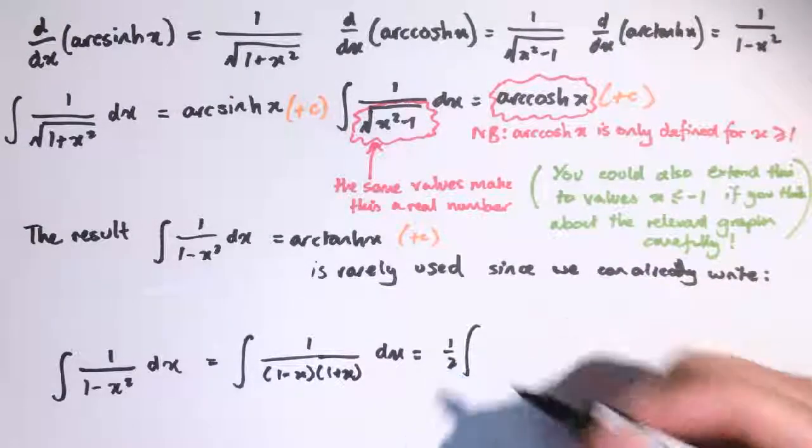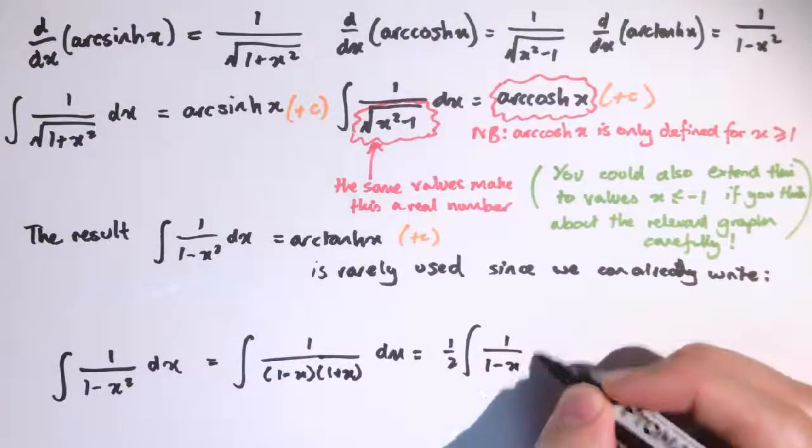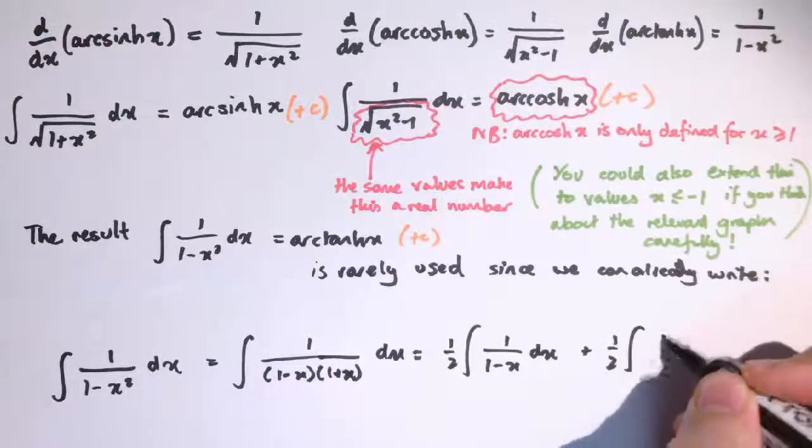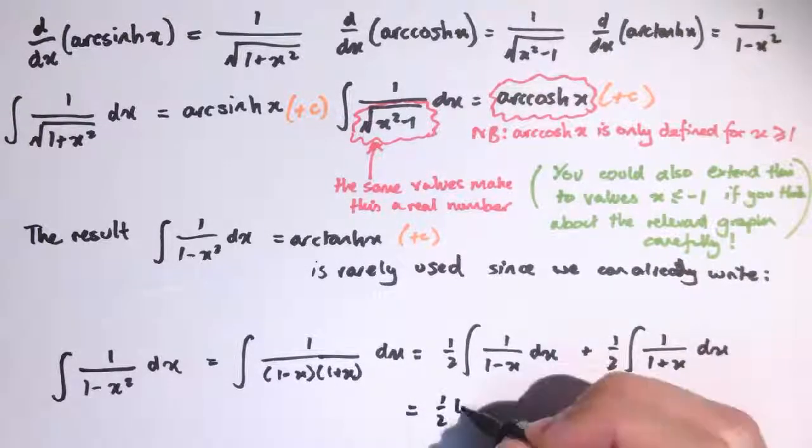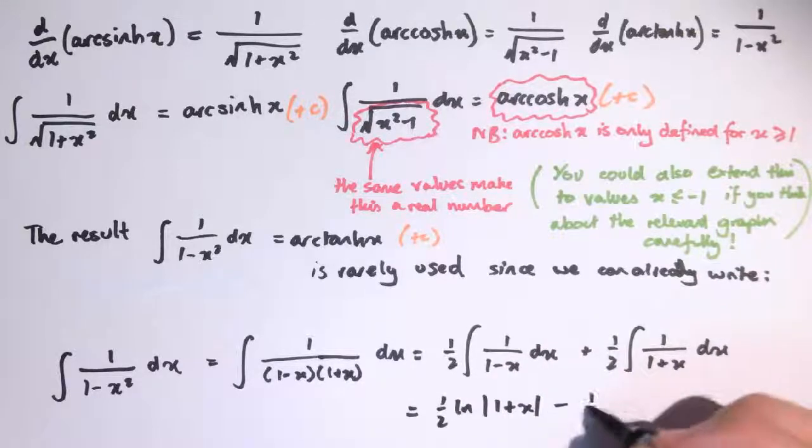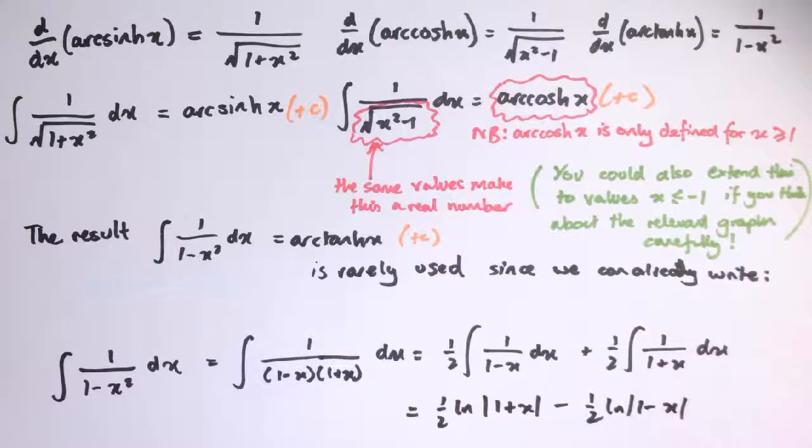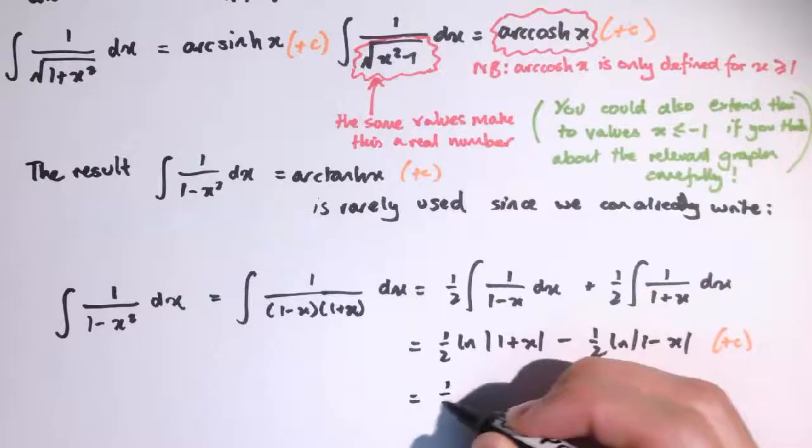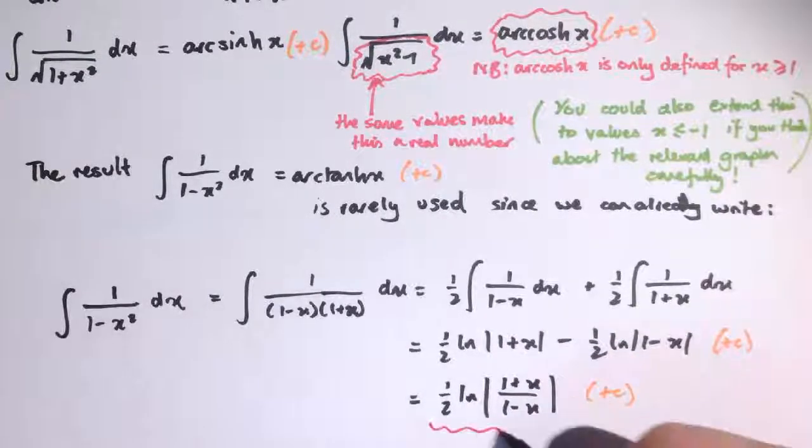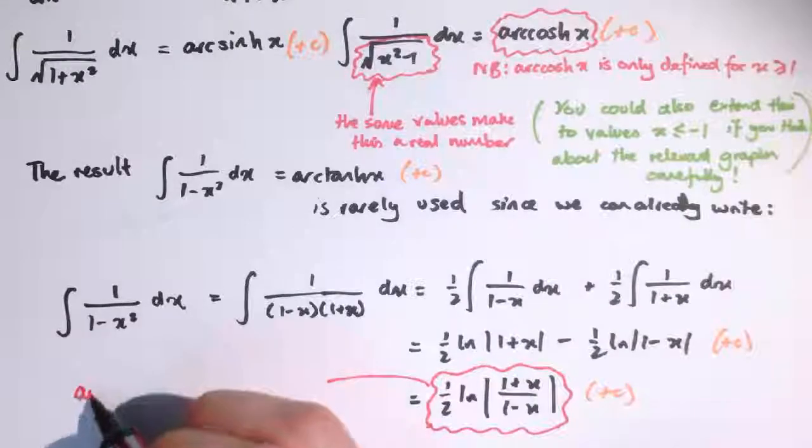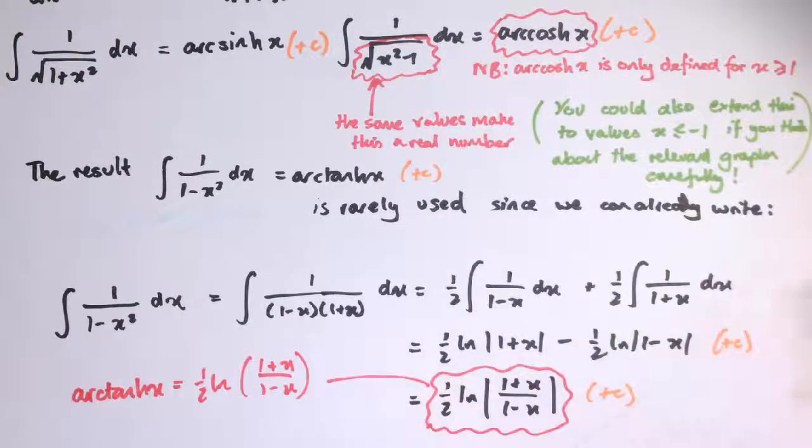As half integral 1 over 1 minus x dx plus half the integral of 1 over 1 plus x dx. Those integrate to 1 half log mod 1 plus x minus 1 half log 1 minus x, and using the rules of logarithms, this is 1 half log mod 1 plus x over 1 minus x, and you might note there a similarity between that and the logarithmic form of arc tanh x.